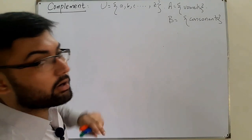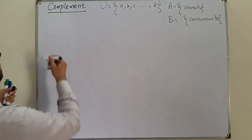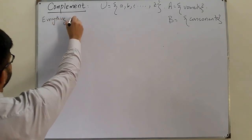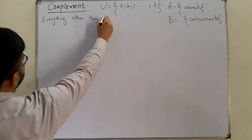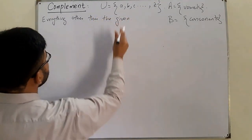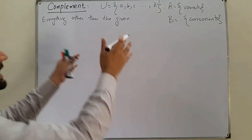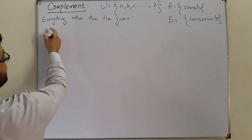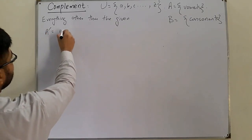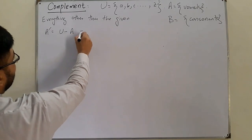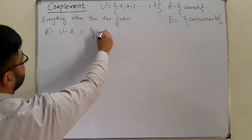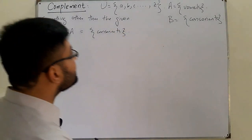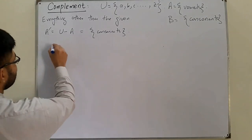These two combined would make the universal set. Now, complement is everything other than the given — 'the given' means that for which you have to find the complement. So let's say I have to find the complement of A. The complement of A is denoted like this, and it would be equal to the universal set minus A, which would be equal to the set of consonants.